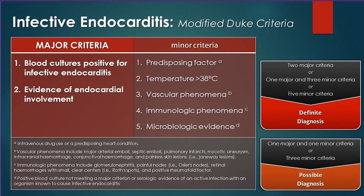Before we look at the mnemonic, let's take a brief look at the criteria itself. This picture shows the modified Dukes criteria, which is made up of a major criteria and a minor criteria. The major criteria has two components and the minor criteria has five components — seven components in total. To make a definite diagnosis of infective endocarditis, you need two major criteria, or one major plus three minor criteria, or all five minor criteria.